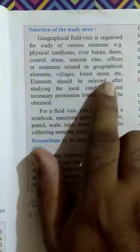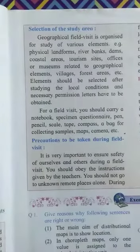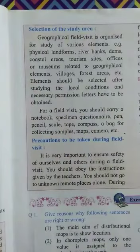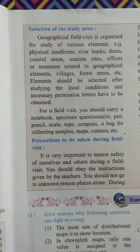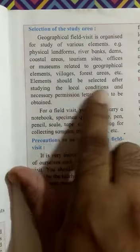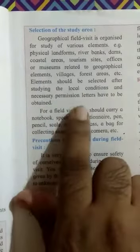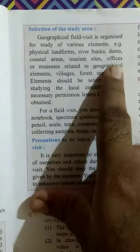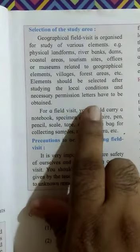Other places include a village, forest area, etc. These are the different suggestions made for field visit. Elements should be selected after studying the local condition, and the necessary permission letter has to be obtained. If you are visiting a government office or a museum, you need a permission letter.